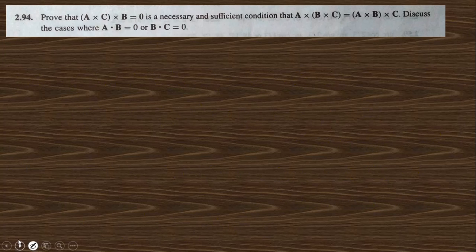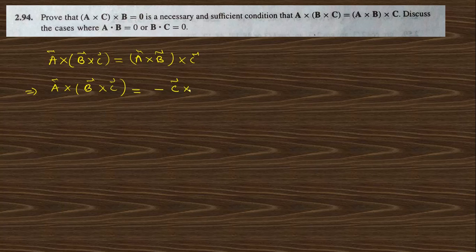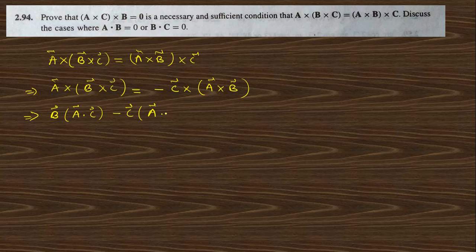The next question: prove that a cross (b cross c) equals zero is a necessary and sufficient condition. We write a cross (b cross c) plus a cross (b cross c) — actually: a cross (b cross c) minus c cross (a cross b). Using the BAC-CAB rule: back-CAB gives b(a·c) minus c(a·b).